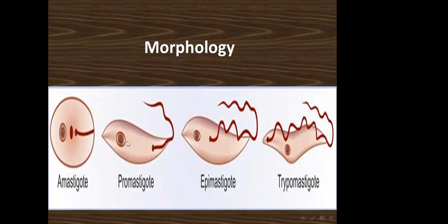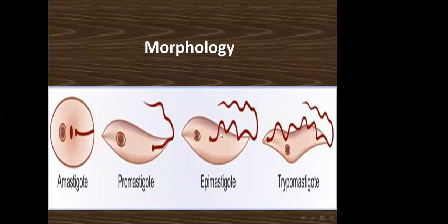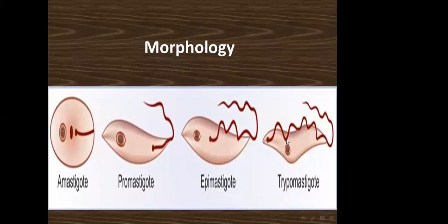For example, the promastigote is the infective stage for Leishmania tropica, Leishmania donovani, and Leishmania braziliensis. The amastigote is the diagnostic stage for all three species. For Trypanosoma brucei — causing Gambian or Rhodesian sleeping sickness — the trypomastigote is both the infective and diagnostic stage. For Trypanosoma cruzi, the amastigote is the diagnostic stage.